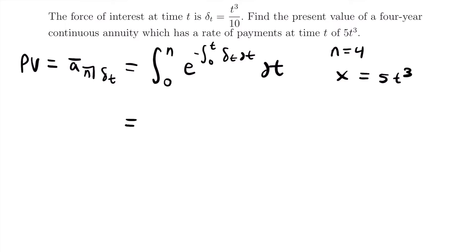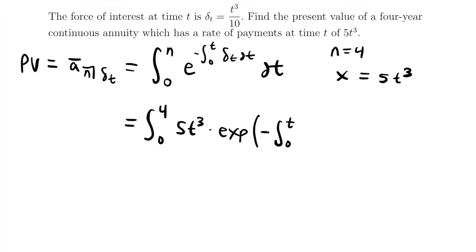This gives us the integral from 0 to 4 of 5t³ — the payment — times exp of the negative integral from 0 to t of delta_t, which is t³ divided by 10, times dt for that inner integral, and then dt for the outer integral. We use the exp notation here to make the inner integral easier to read going forward.